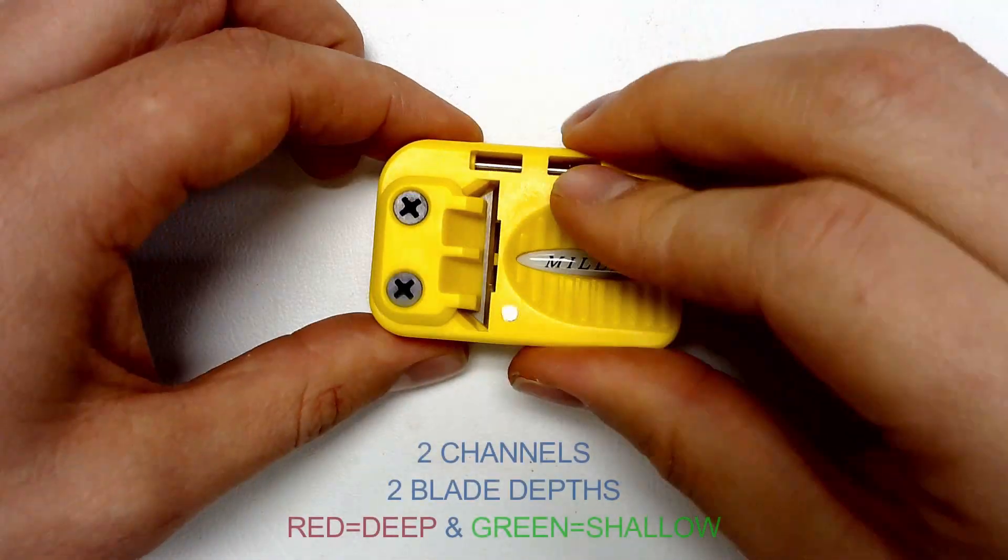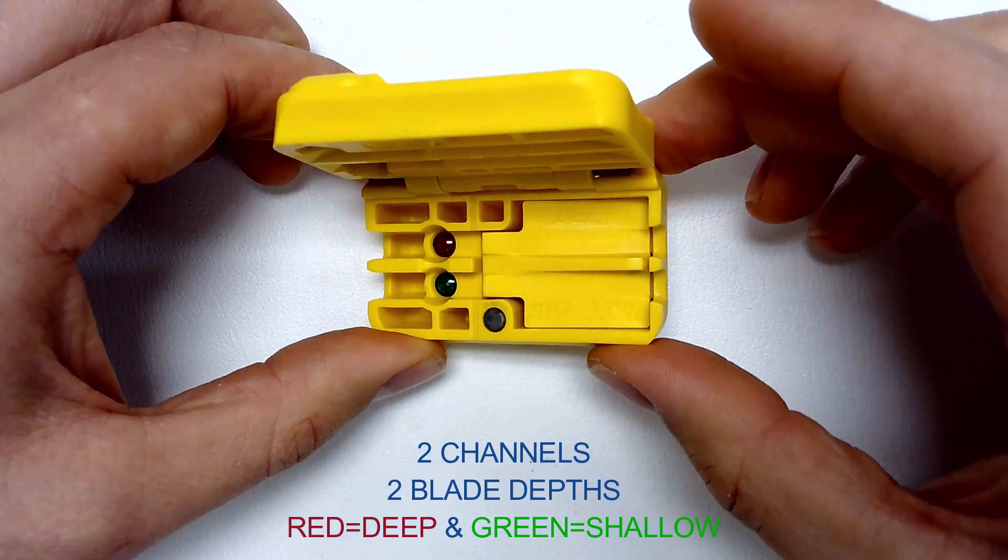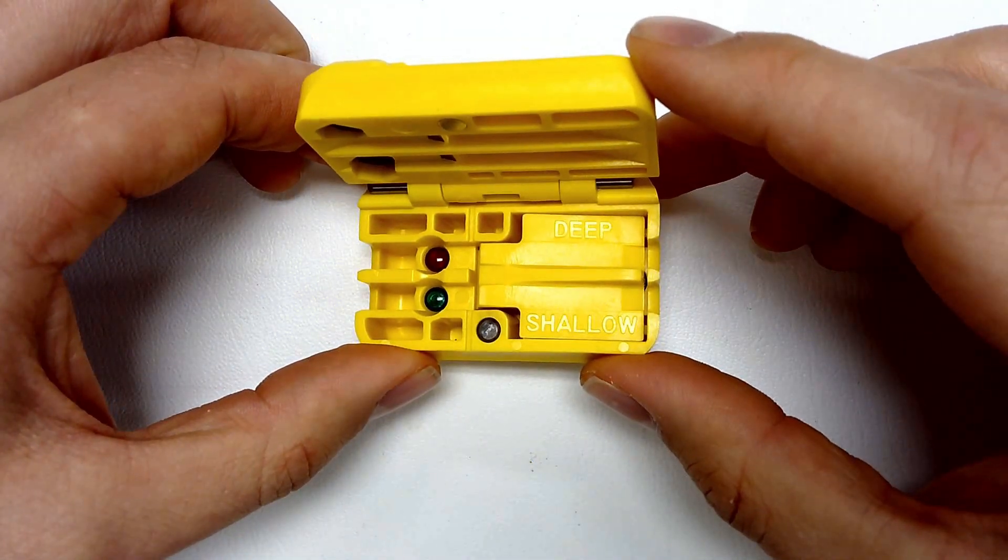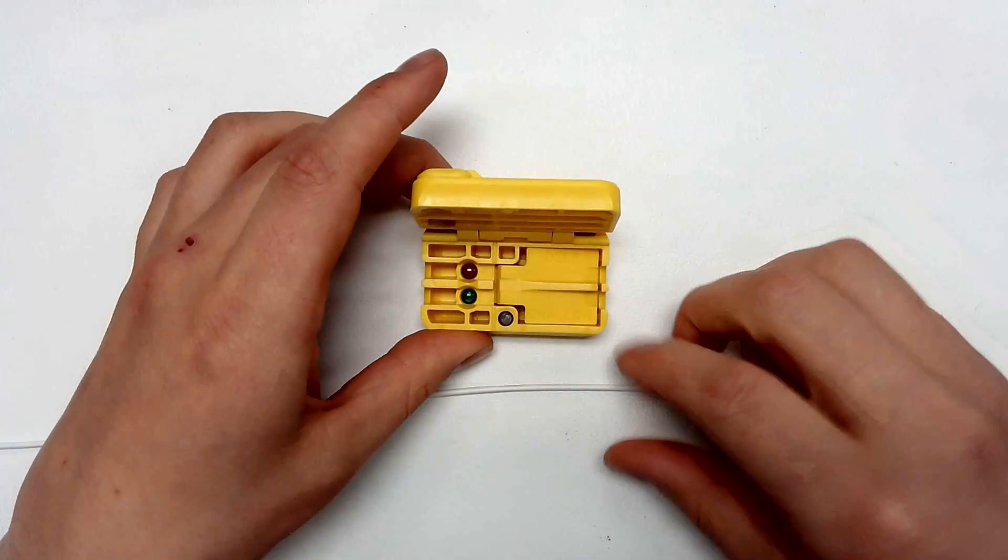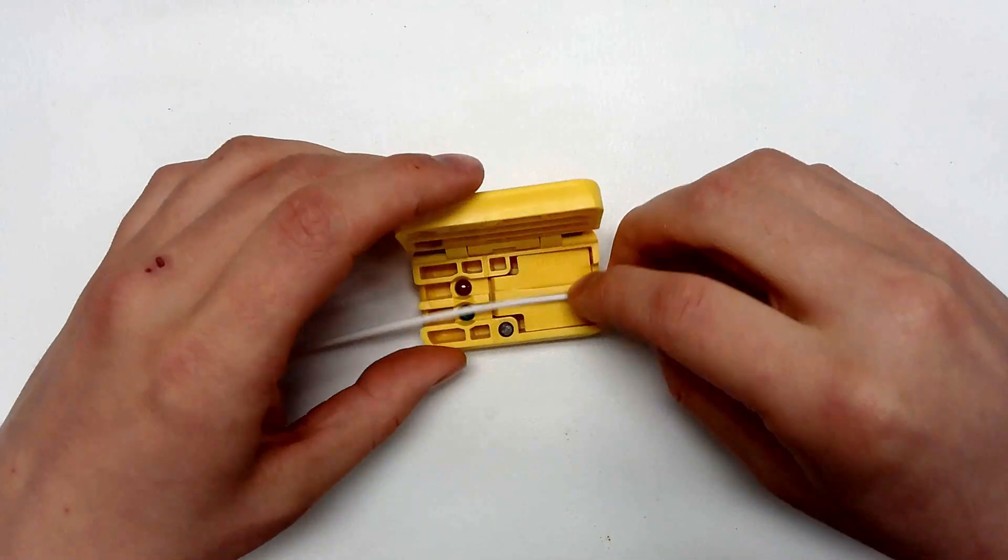Simply open the magnetic latch lid and load the cable into the channel. The dual channel design offers two cutting depths. Each channel is color coded and easily identifiable. Both channels will accept cables up to five millimeters.